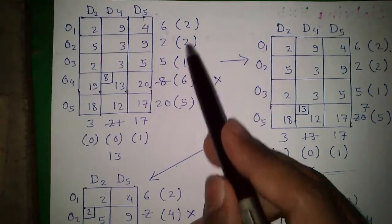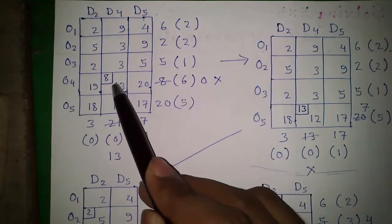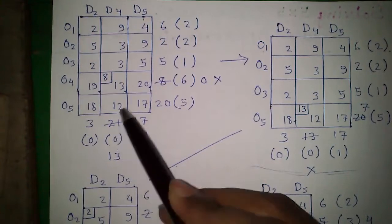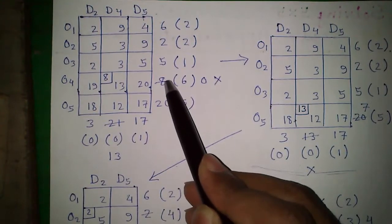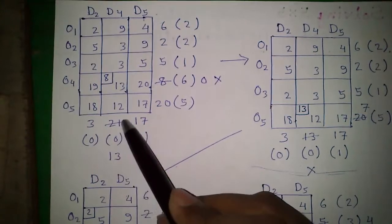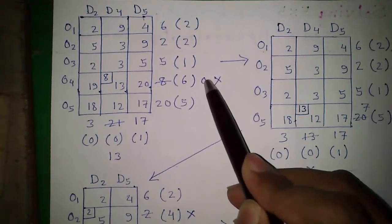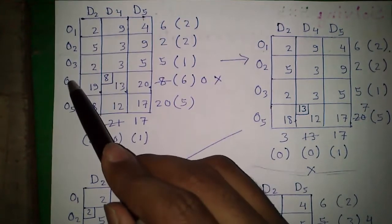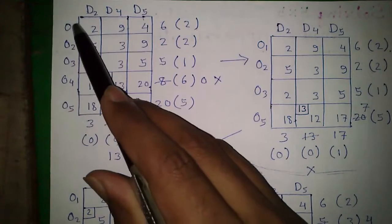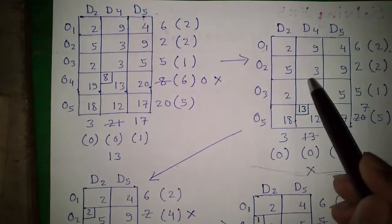Again, same process. The largest number is 6, and against this 6 the smallest number is 13. The demand is 21 and supply is 8. We take the minimum value and allocate 8; the demand becomes 13 and supply becomes 0 — it is exhausted. In the next table, we will not continue with O4. We will only continue with O1, O2, O3 and O5.